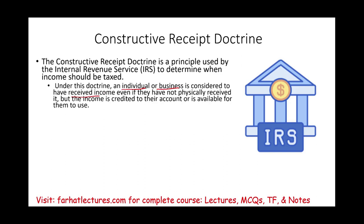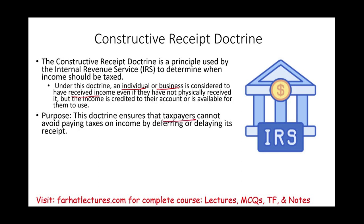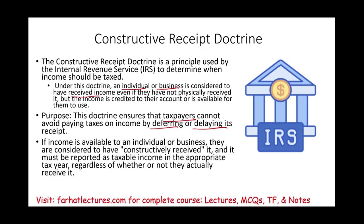Let's assume the money was credited to your account. You did not receive it but it's available to you — it is your money, therefore you need to pay taxes. The purpose of this doctrine is to ensure that taxpayers cannot avoid paying taxes by deferring or delaying receipt. If income is available to an individual or a business, they are considered to have constructively received it and it must be reported as taxable income in the appropriate tax year, regardless of whether they actually received it or not.